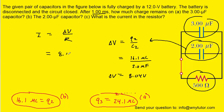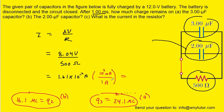Taking that potential difference and dividing by the resistance gives a current of approximately 1.61×10⁻² amps. Converting to milliamps by multiplying by 10³ gives 16.1 milliamps, which is the correct answer to Part C.